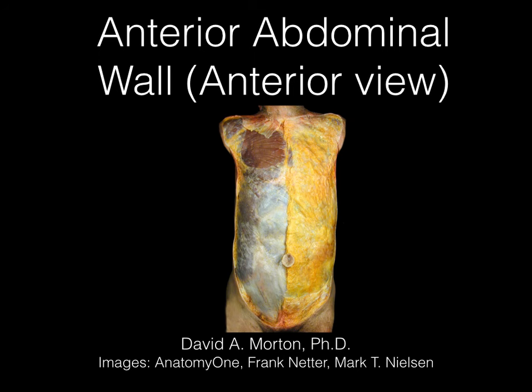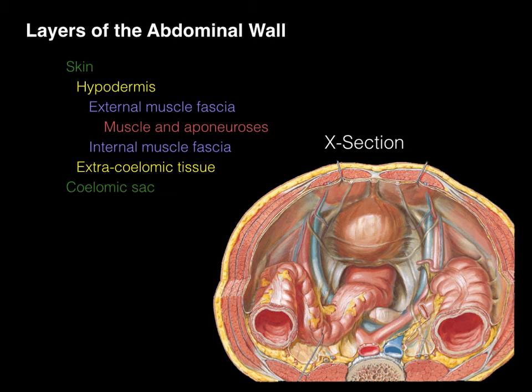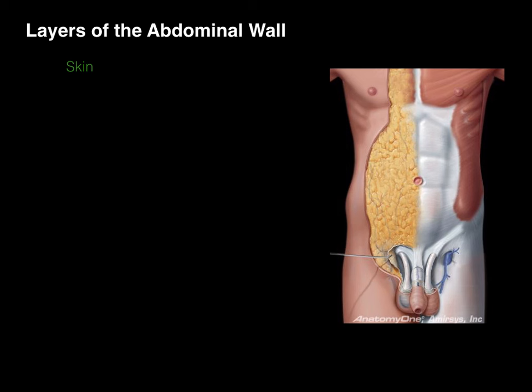Anterior abdominal wall from an anterior perspective. Here are the layers of the abdominal wall from skin down to the coelomic sac and everything in between. The last time we covered this in the other tutorial, we did it by cross-section. This time we're going to go through these same layers from anterior views. Here we have a step dissection of the front of the abdomen.